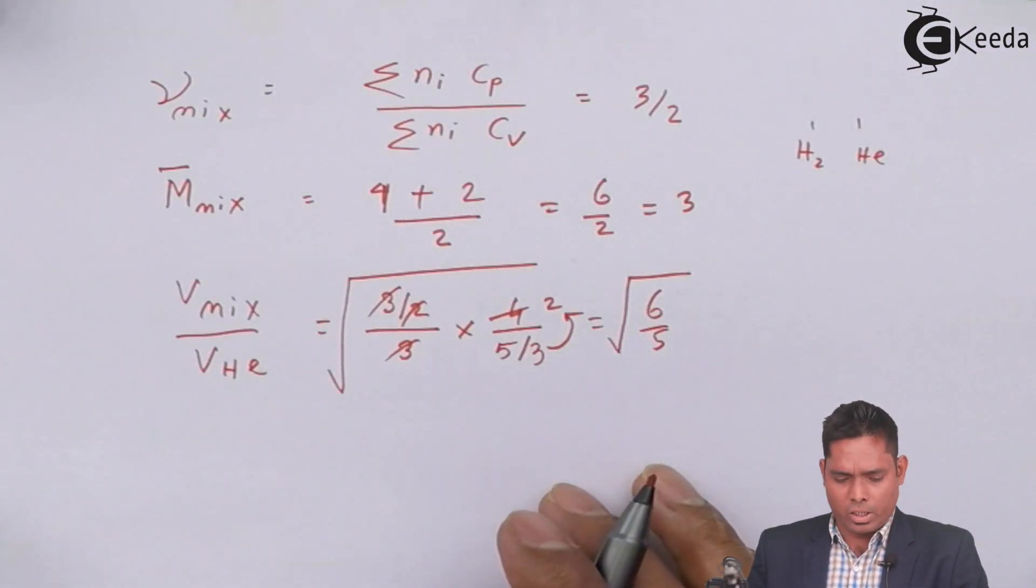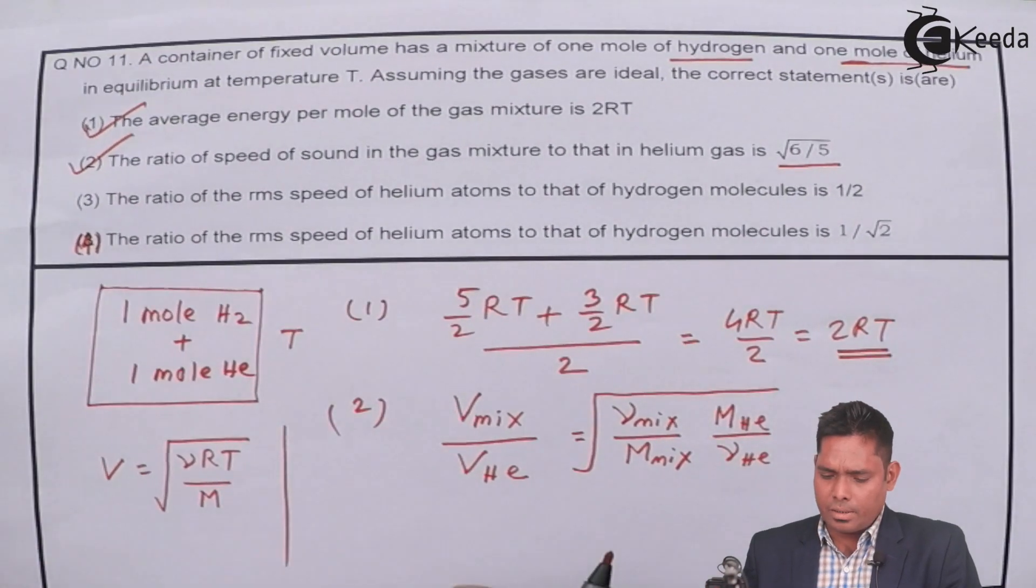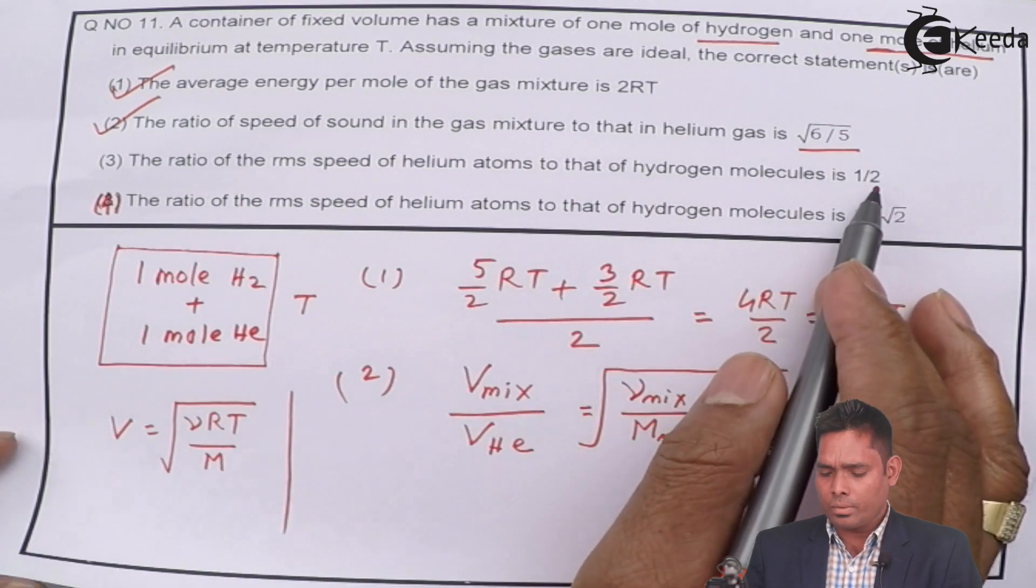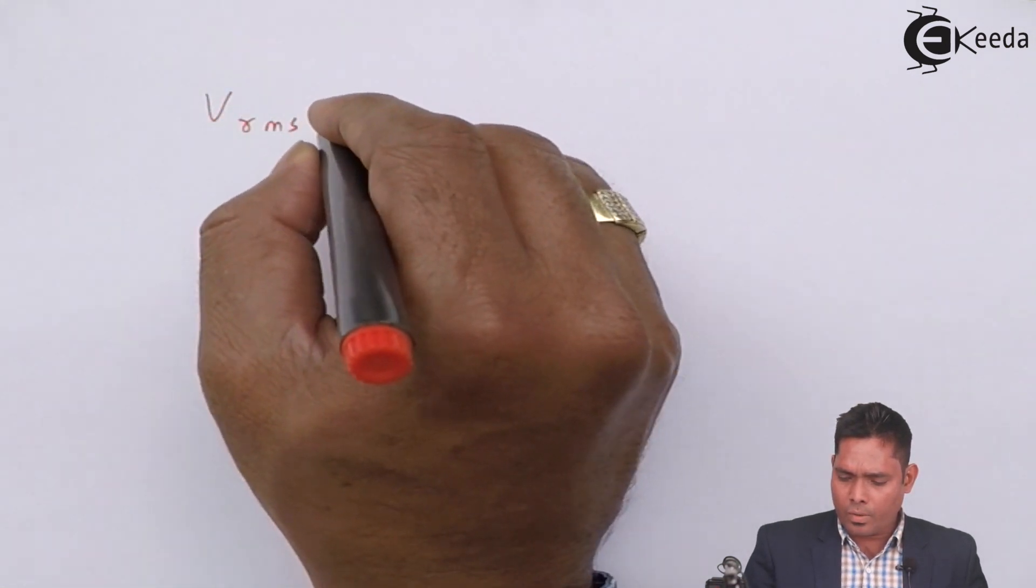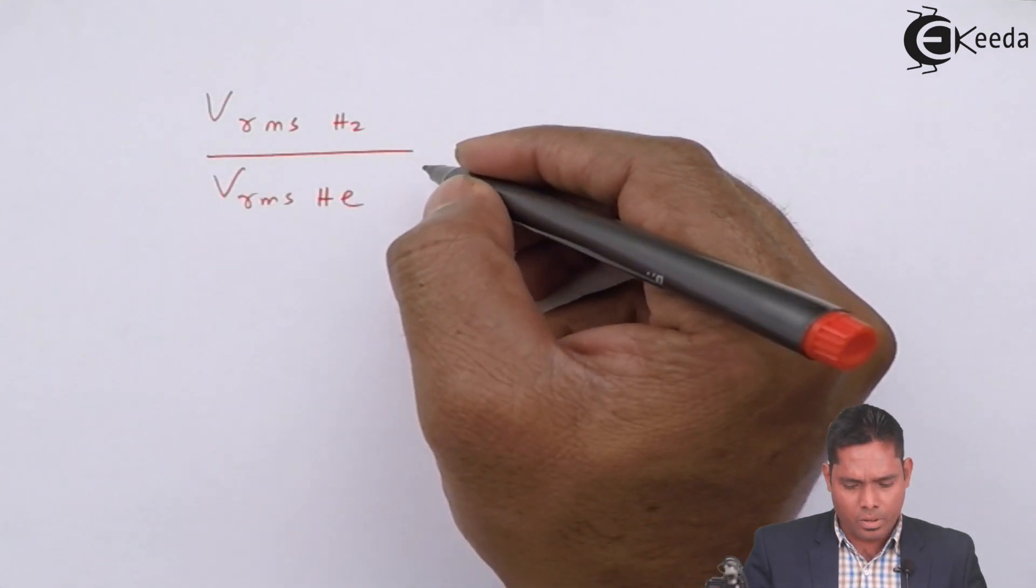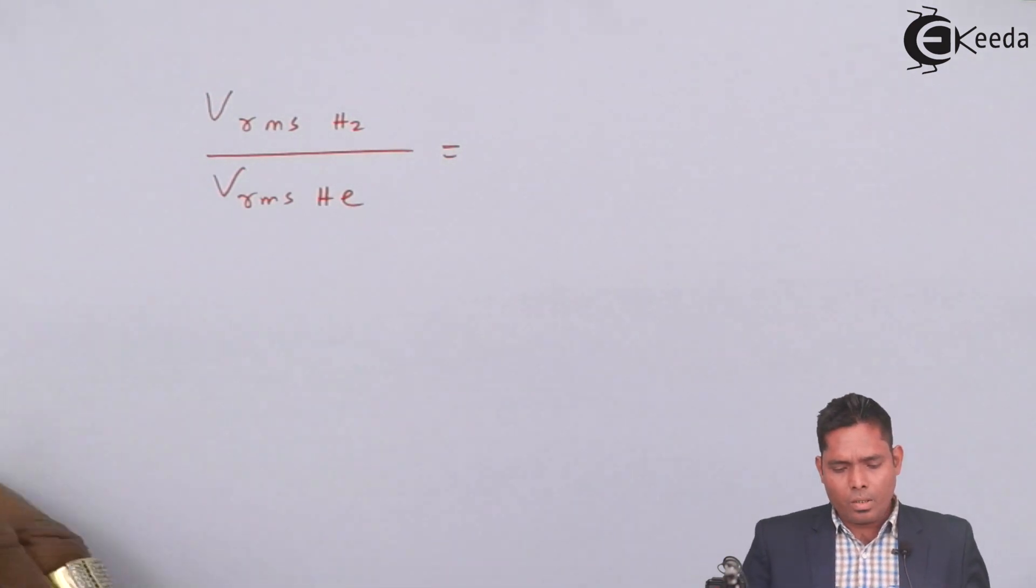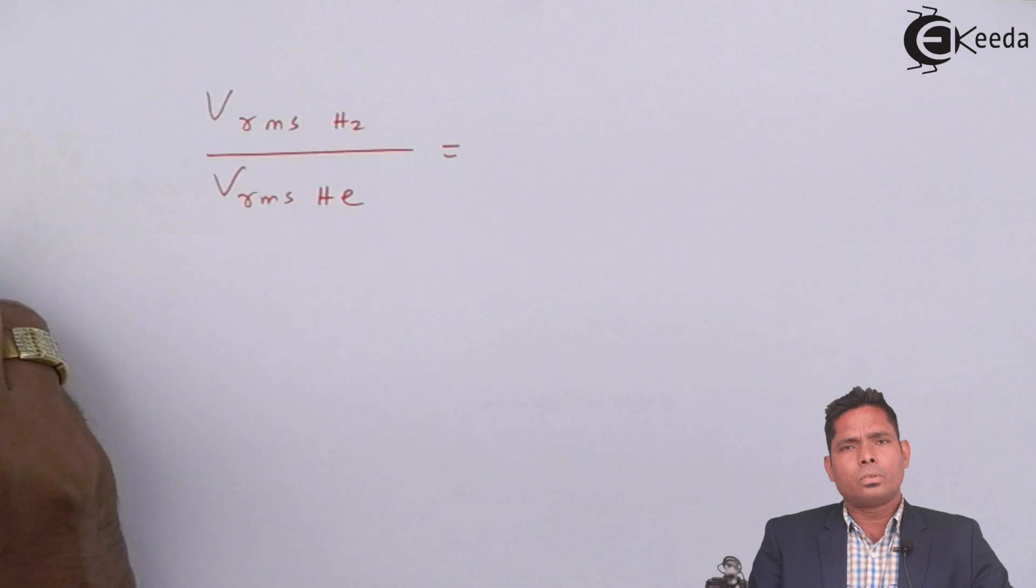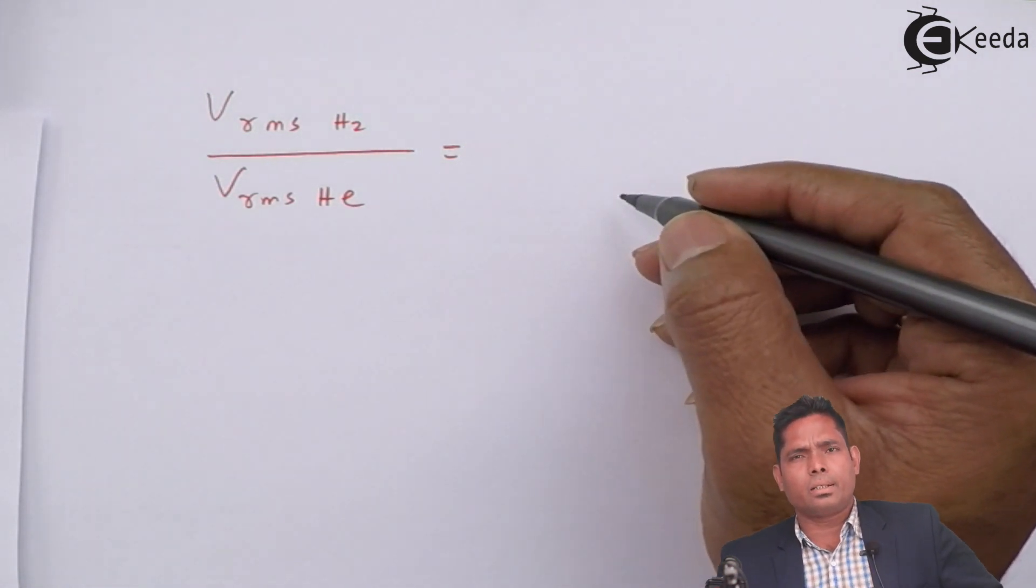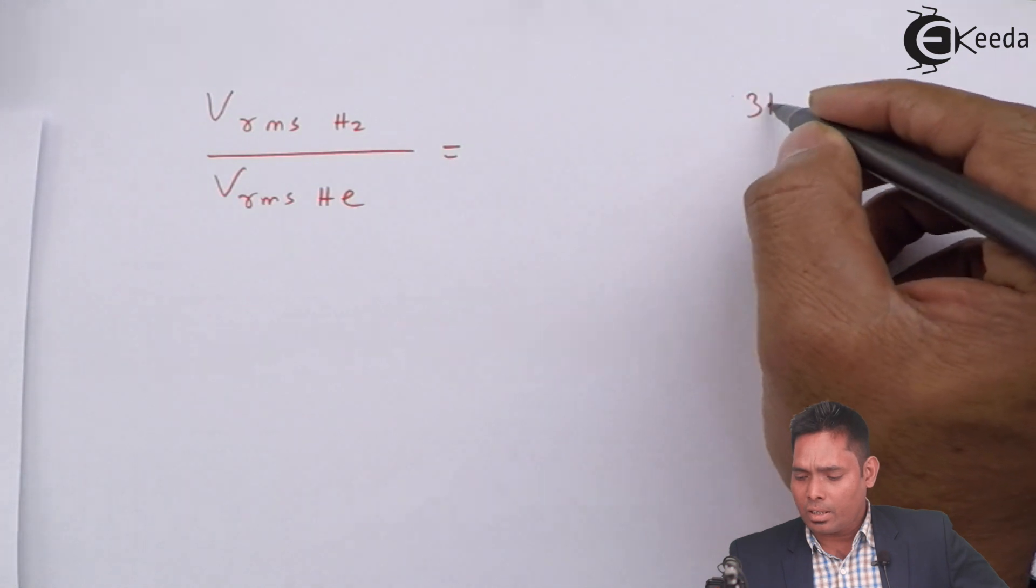The third option says the ratio of RMS speed of helium atoms to that of hydrogen molecules is 1/2. This reverse ratio is asked. Let us find this first. The RMS value is again like the speed of sound, inversely proportional to the square root of molecular weight. RMS speed of any gas is square root of 3RT by M.